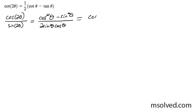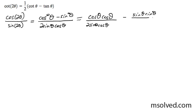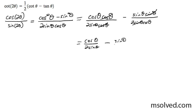What you can do here is break these apart. I'm going to do this so it's easier to see: cosine squared theta over 2 sine theta cosine theta, minus sine squared theta over 2 sine theta cosine theta. The sines cancel out, the cosines cancel out, and we're left with cosine theta over 2 sine theta, minus sine theta over 2 cosine theta.